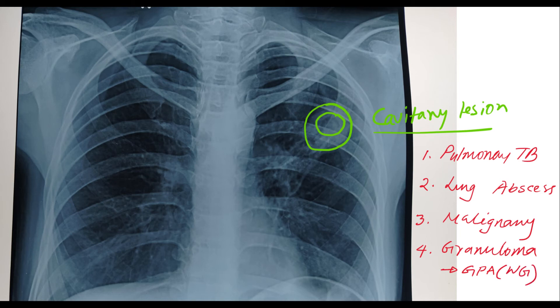Another important cause of granulomatous lesion on the chest X-ray is rheumatoid arthritis. As we know, as an extra-articular manifestation of rheumatoid arthritis, there are pulmonary nodules found on the chest X-ray, and those pulmonary nodules may appear as cavitary lesions. So these four are the main causes of cavitary lesion.